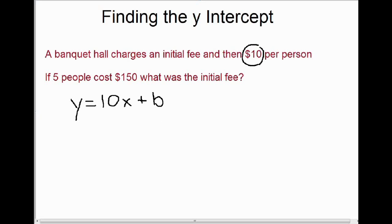Well the goal here is to try to find out what the initial amount is. And we're given another piece of information here. We're told that if five people went to this banquet hall, it would cost $150. So x is the number of people, and $150 is the total cost. We can substitute these values into our equation. So the total cost is 150. The number of people was 5. So instead of writing x, I'm going to write 5. And we still don't know what the initial fee is, so we have to leave that as b.